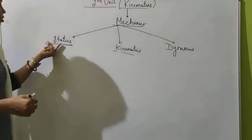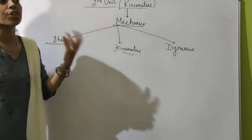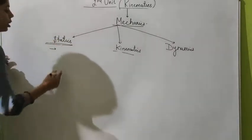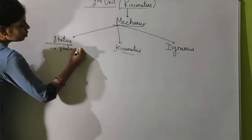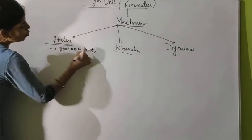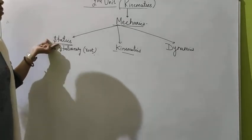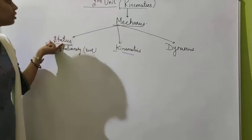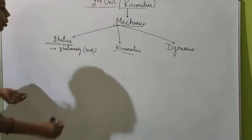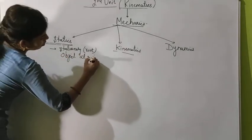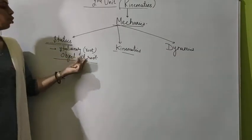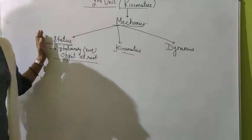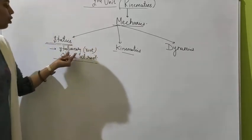Whenever we hear the word 'static', the first thing that comes to mind is something stationary. Statics is a branch of mechanics, and mechanics is a branch of physics. So indirectly, statics is the branch of physics which deals with the study of objects at rest.